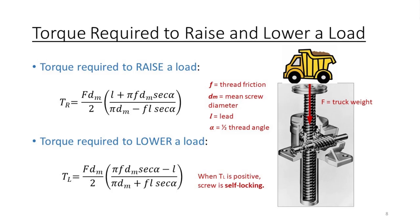You may be wondering why torque is required to lower a load. Why wouldn't the screw just spin its way back down? This is due to friction. In some cases, the thread friction is high enough that the lead screw just sticks in place. In this case, the lead screw is said to be self-locking. How do you know if you have a self-locking screw? When you get a positive value for TL, you have to apply some torque to lower the load.